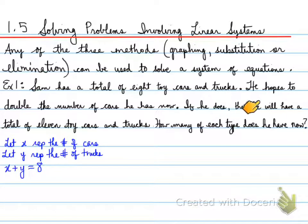The next thing we know is that if he doubles the number of cars he has now, he will have a total of 11 toy cars and trucks. So if he just doubles the number of cars, 2X plus Y will equal 11. So these are our two equations. Let's go through the steps. Label 1 and 2, draw a line to separate the equations.